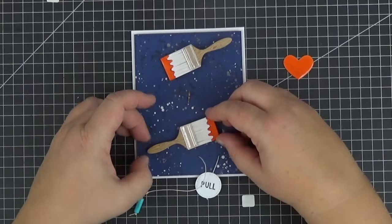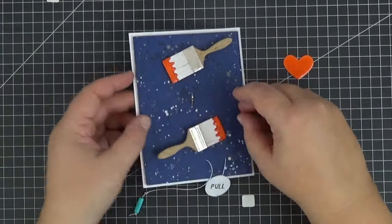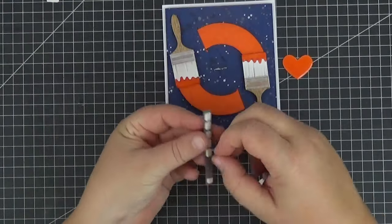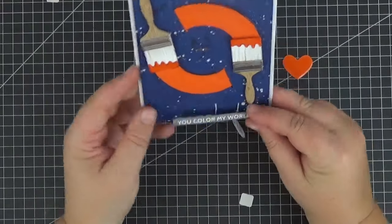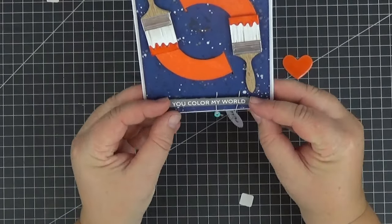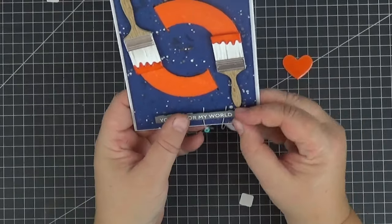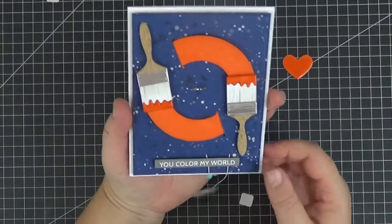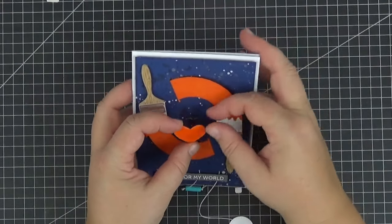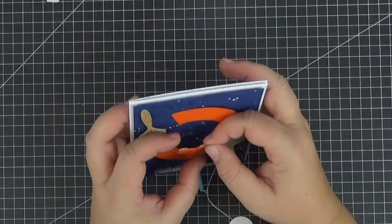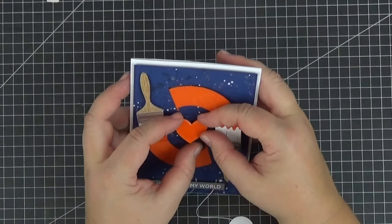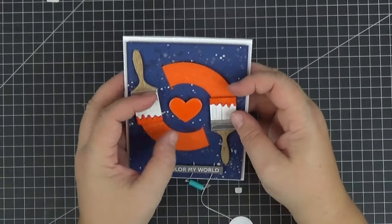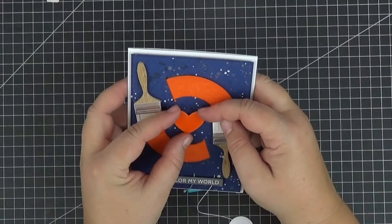I'm happy with the results so I can now add the sentiment strip which hopefully will fit on the lower edge. Yeah, I think it'll look good there. The only thing that's missing is the heart from the In the Name of Love dynamic set. And here it is. I added some slivers in the corners. And that's it. Our card is finished.